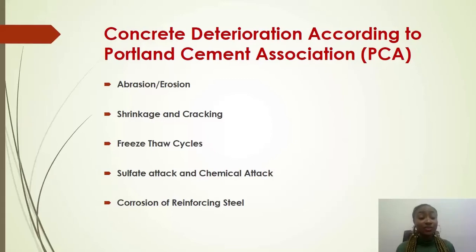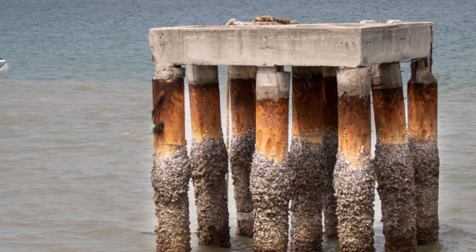Sulfate attack and chemical attack are also causes of deterioration. Groundwater contains sulfate, and when you have chemicals on your concrete surface, because concrete is porous, they get to penetrate into your concrete — aside from water — causing harm. Also, corrosion of your reinforcing steel occurs, especially when chloride is involved. That is why we advise against the use of chloride-based accelerators when working with reinforced concrete.